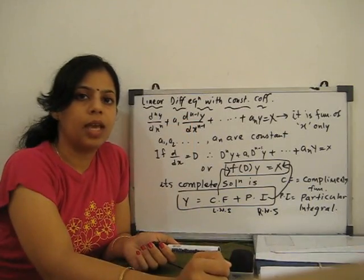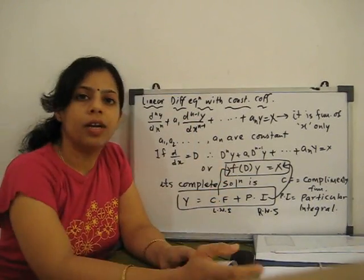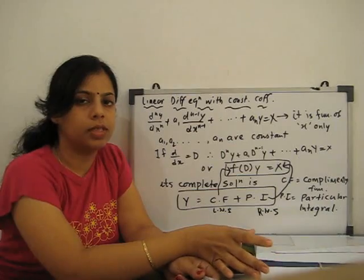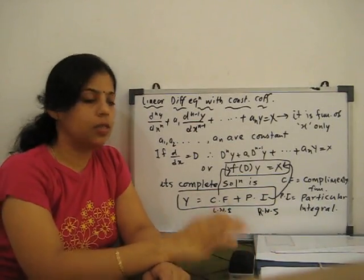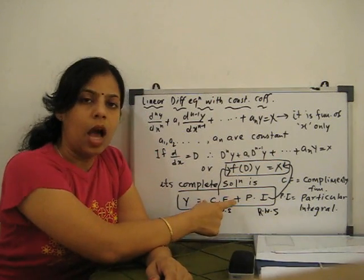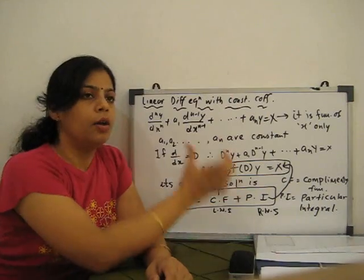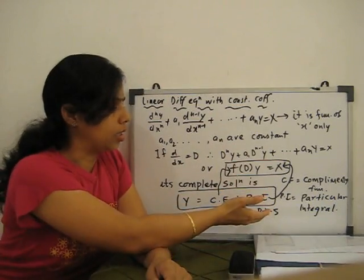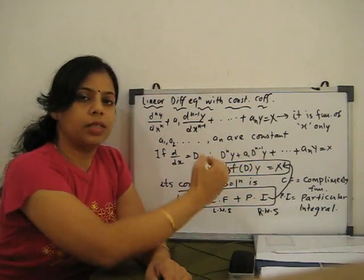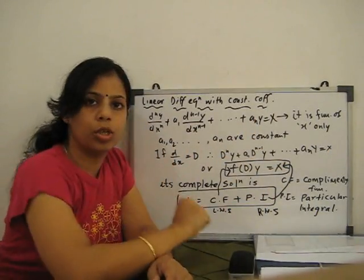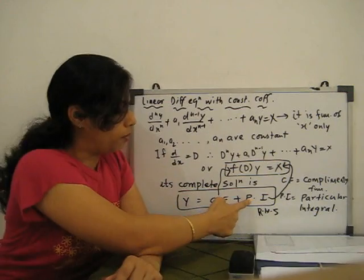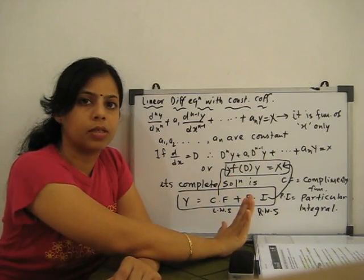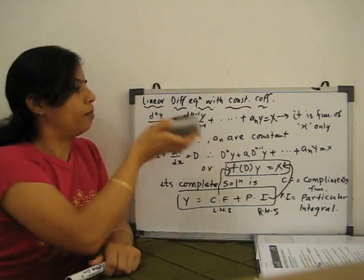There are different cases for finding the complementary function. We first discuss all cases for the CF, then move to the particular integral. When solving for the CF, we consider the right-hand side equal to zero. If X = 0, then PI = 0, and our solution is simply y = CF.